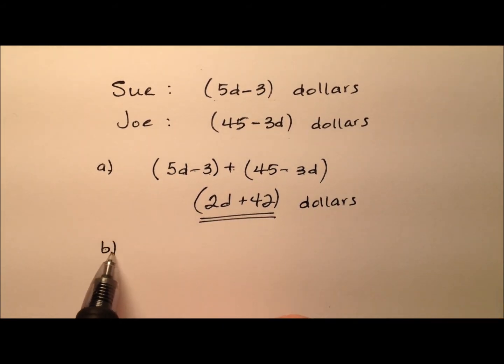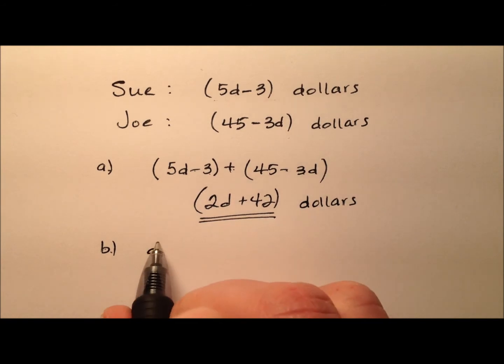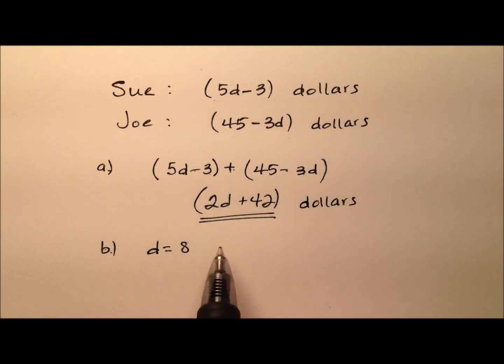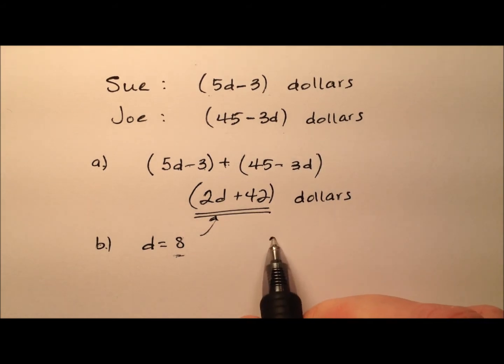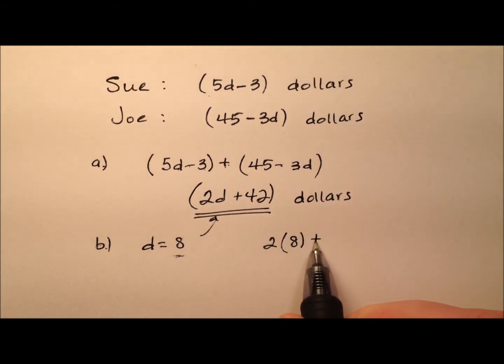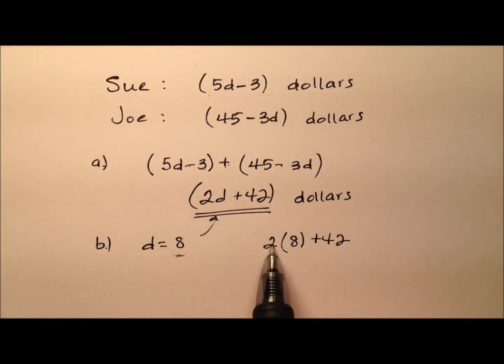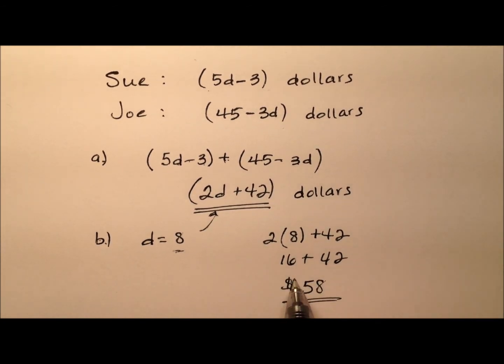Part B says, given that the value of d is 8, how much money do they have together? Now that we have a value for d, we can substitute that in. So 2d plus 42 becomes 2 times 8 plus 42, which is 16 plus 42, so 58 dollars together.